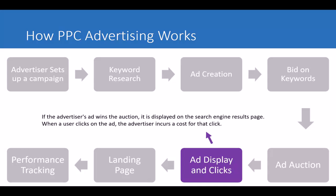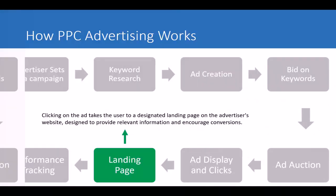When you win an auction, your ad is displayed on the search engine results page. When a user clicks on the ad, the advertiser incurs a cost for that click — that's when you pay. Those clicks can go to your website or product pages, which can result in a sale. The clicks take the user to a landing page designed to provide relevant information and encourage conversions. This landing page can be your product page, a special landing page, your home page, or anything you want.